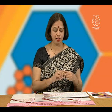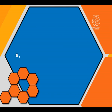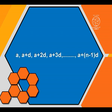We know that if we take an arithmetic progression, where A is the first term and D is the common difference, then it can be written as A, A plus D, A plus 2D, A plus 3D, and so on up to A plus (N minus 1) into D.